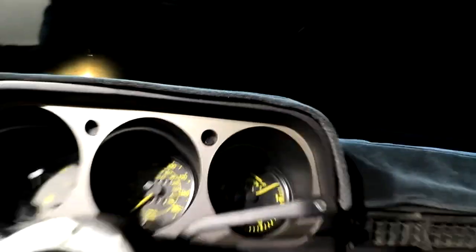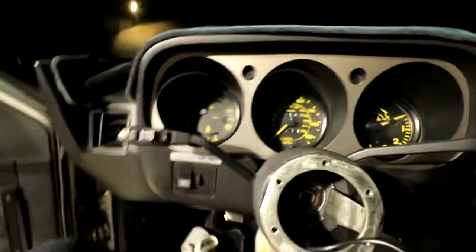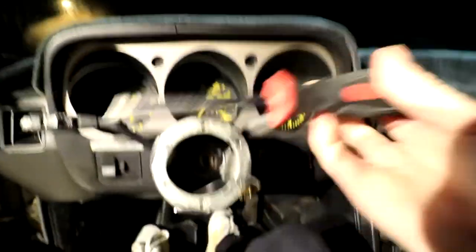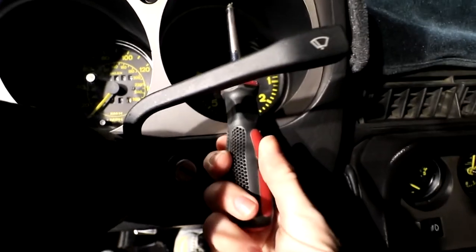All right. So, the next step is, there are two screws underneath. One right here and one right here. Most of these appear to be Phillips. Mine are Phillips. So, all you need is a nice little Phillips. And just come up underneath. And we're going to start undoing these.